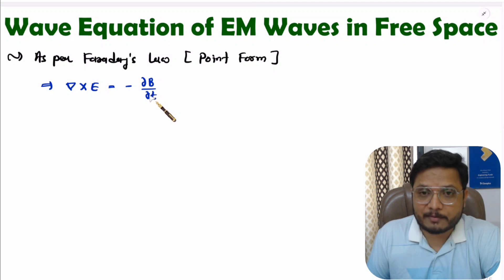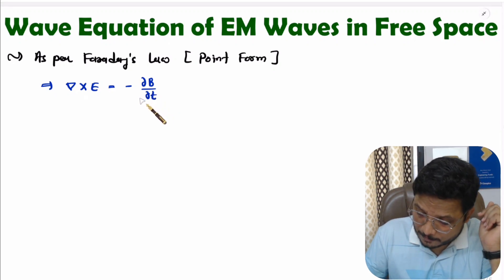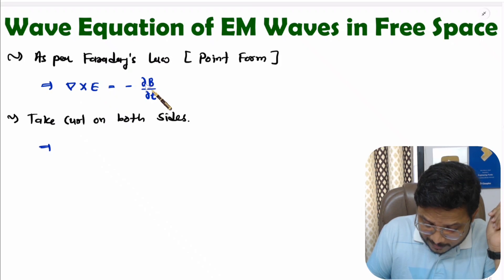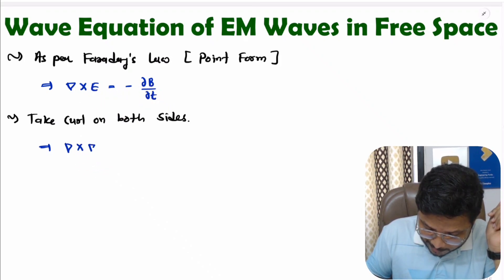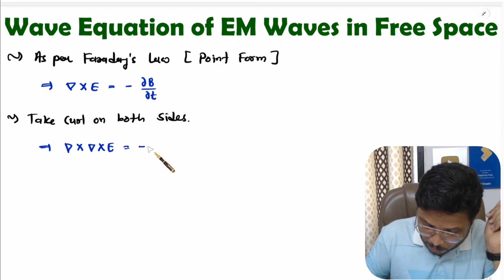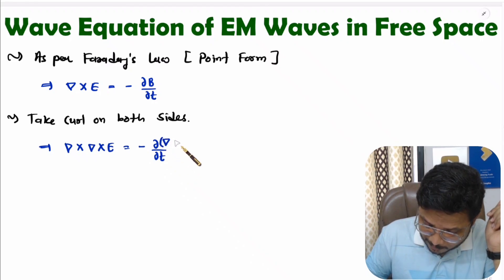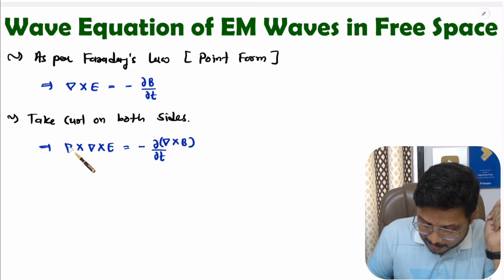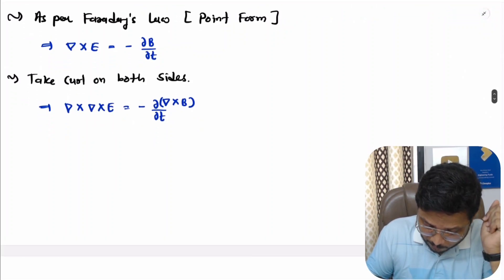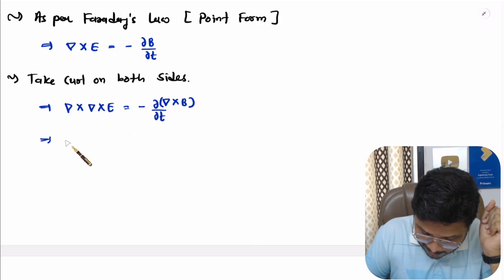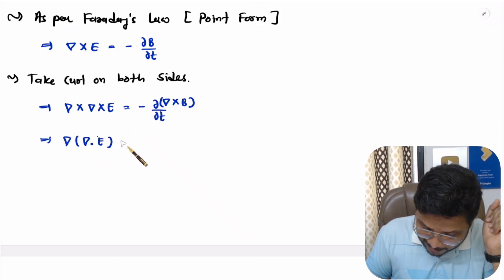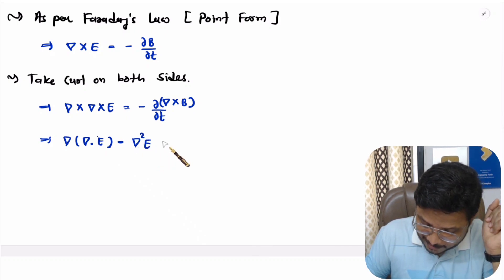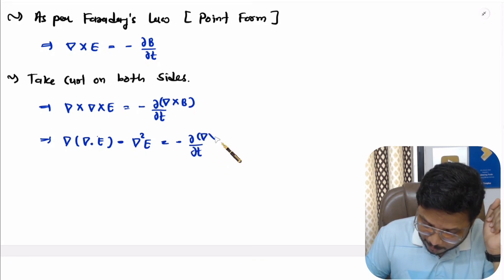Now with this equation, I will take curl on both sides. If you take curl on both sides, then on the left side we will have del cross del cross E, and on the right side we have minus of del by del T of del cross B. Now let us elaborate the left-hand term. We have curl applied two times, and if you want to simplify this, that is del of del dot E minus del square E, equals to minus of del by del T of del cross B.